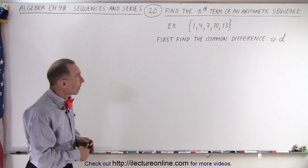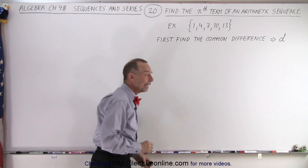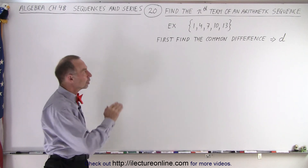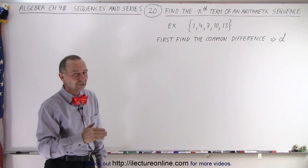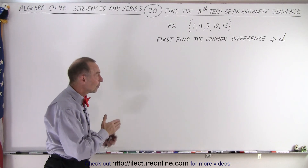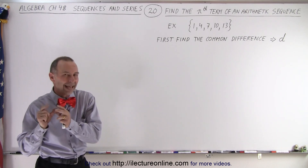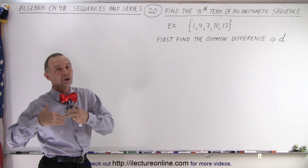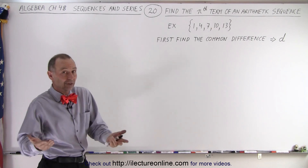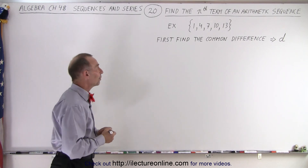We have a sequence of five numbers: 1, 4, 7, 10, and 13. We first always need to find what we call the common difference. If it's an arithmetic series or sequence, the difference between all the terms would be exactly the same. That difference is called the common difference — common means it's the same, and difference is difference. Let's do that on this particular example.